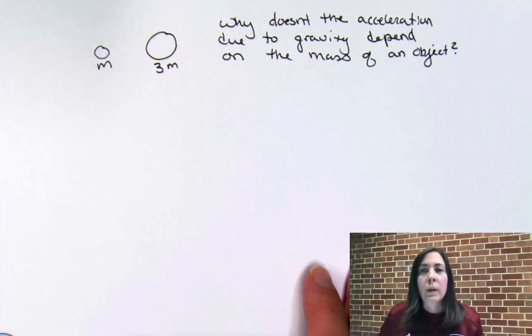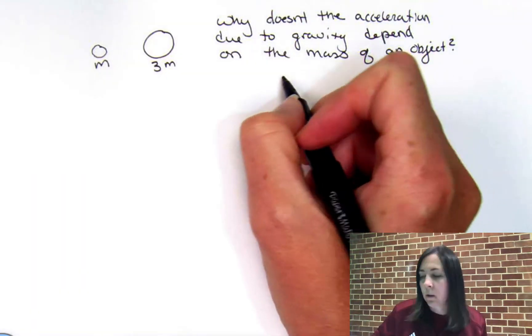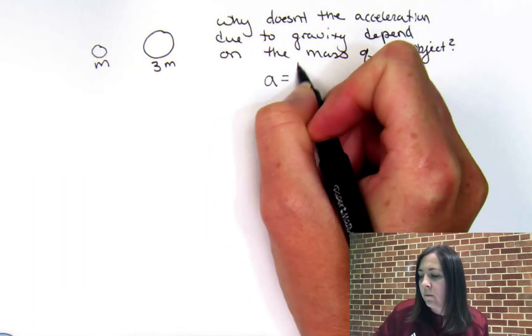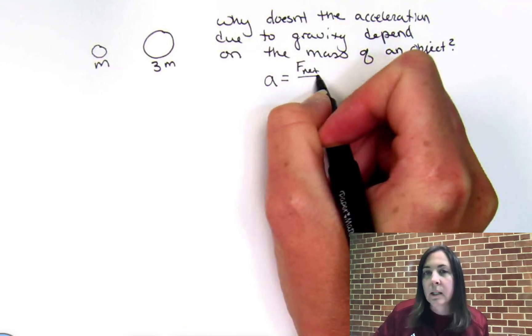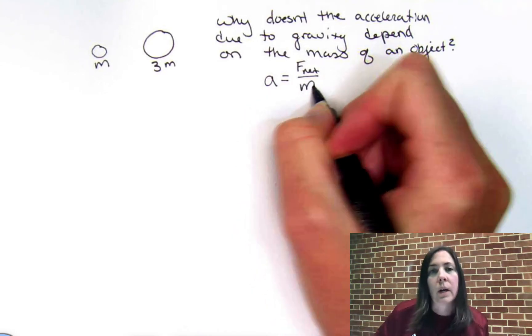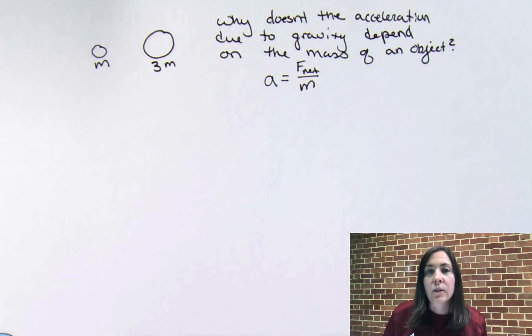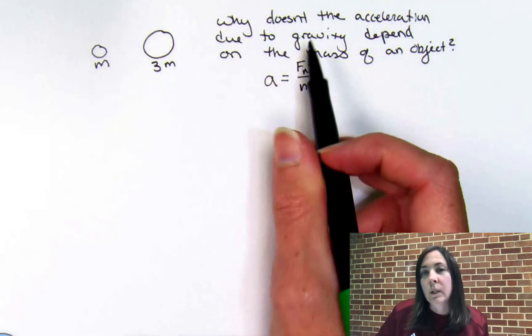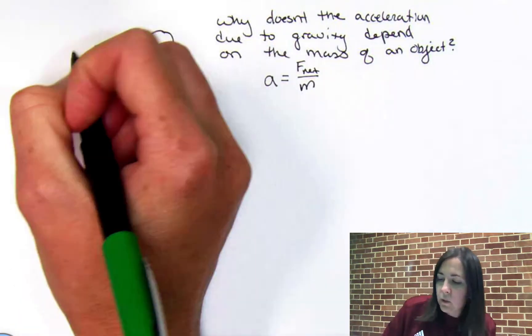When we think about acceleration, we think about Newton's second law that says the acceleration is directly proportional to the net force on the object and inversely proportional to that object's mass. And so, before we can start thinking about what the acceleration is, we need to think about what the net force is.